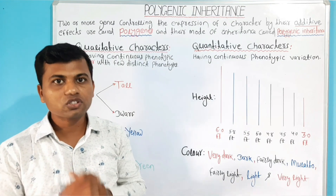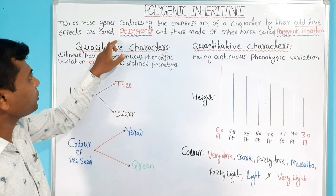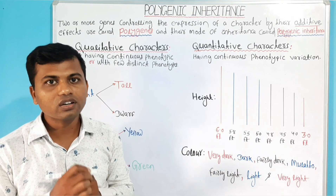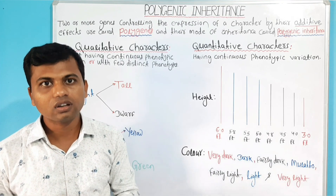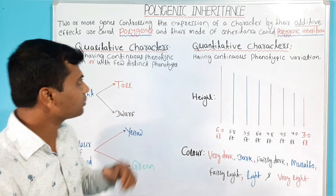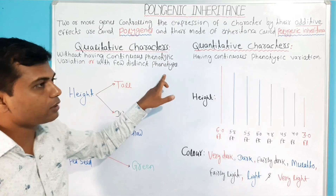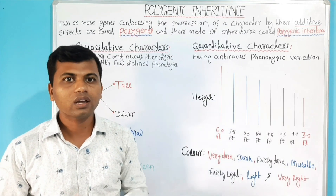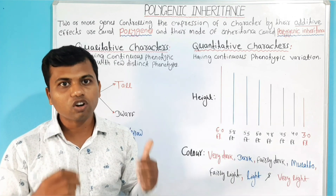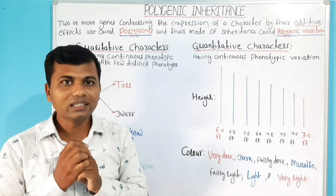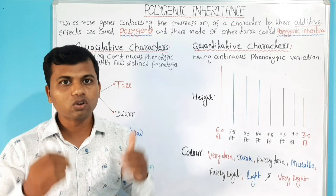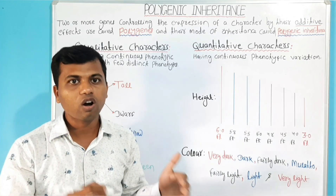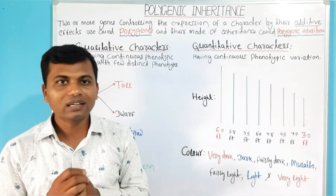First we have to start with the Qualitative Characters. The characters without having continuous phenotypic variation, or with few distinct phenotypes, are called as the Qualitative Characters. According to Classical Genetics or Mendelian Genetics, all characters are Qualitative Characters, having two alternative forms or two contrasting forms.